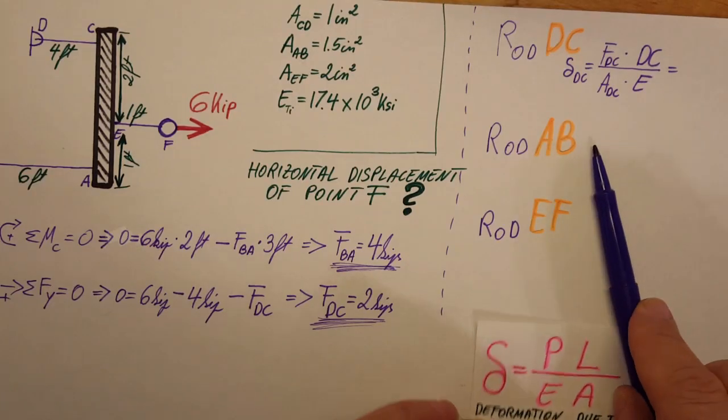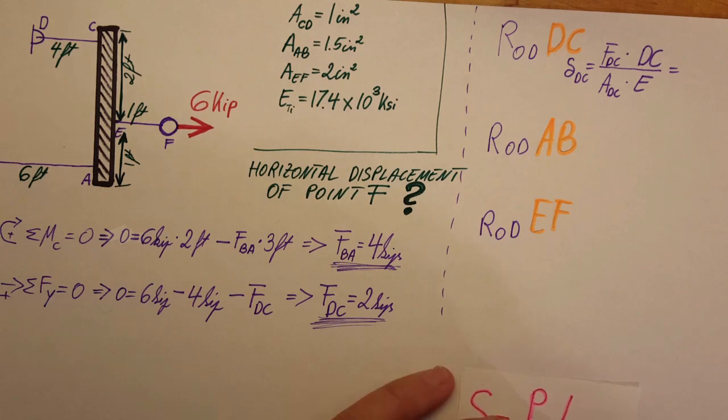I'm going to do the same for the rod AB, EF, and let's see what kind of values we're going to find.